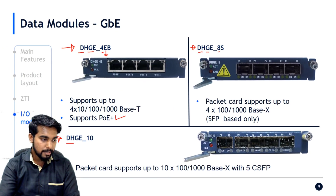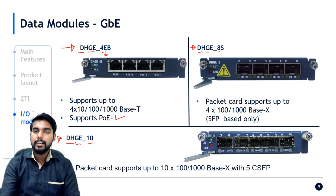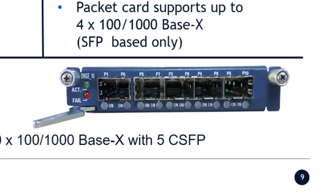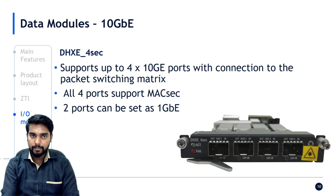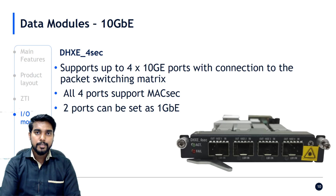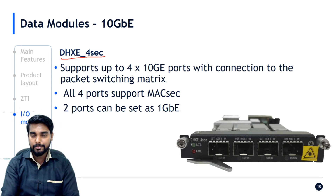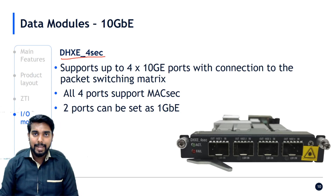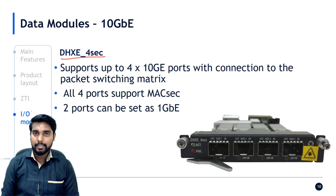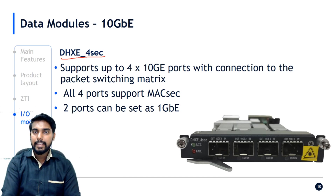The next card is DHGE10 — a data card with 1 gig optical ports. It has five physical ports, but by using CSFP you can double the port count to 10. The DHXE4SEC is a special card used for MACsec, which is a Layer 2 encryption technique. All four ports support MACsec, but without enabling MACsec this card can also be used as a DHXE4 card.